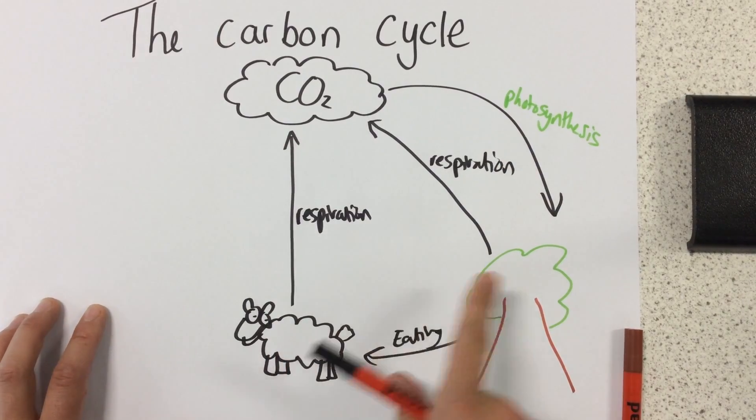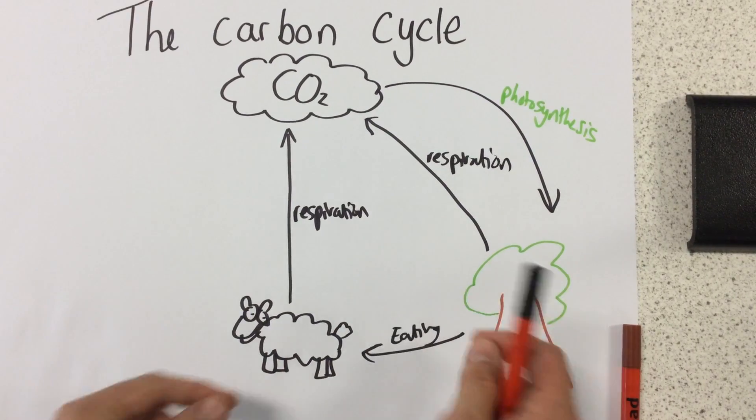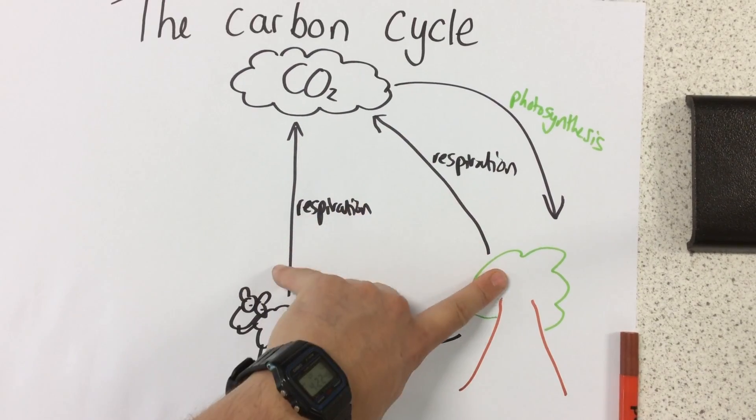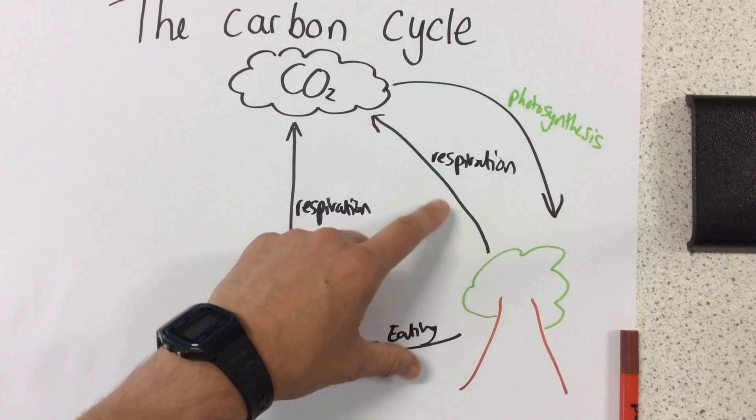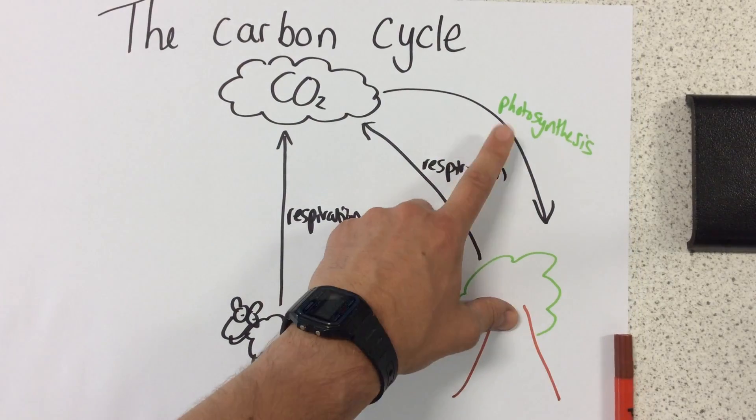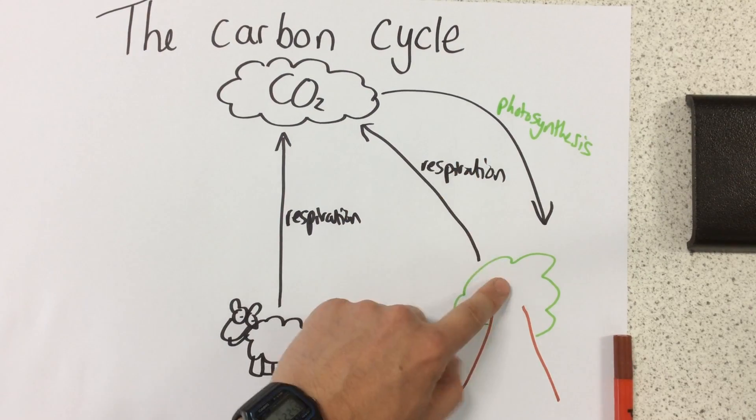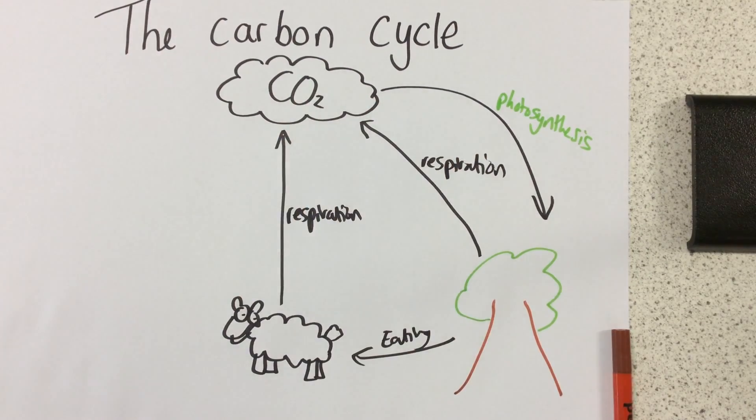As animals and plants respire, they release carbon dioxide. Now this is a stage a lot of people forget. A lot of people forget that plants respire because they think they only take in carbon dioxide. They take in much more carbon dioxide in photosynthesis than they release in respiration. We've got to remember they still do release some carbon dioxide during respiration.